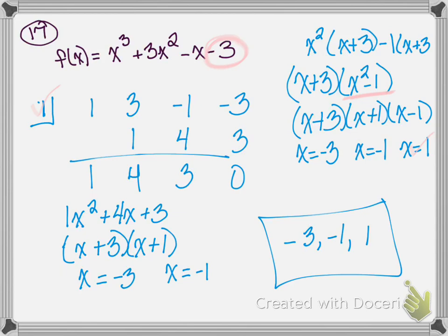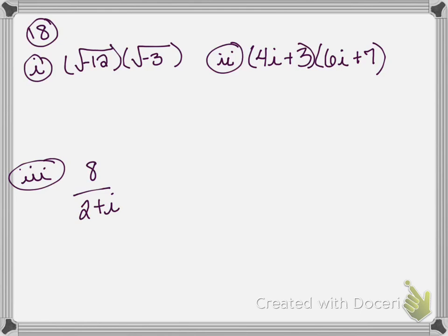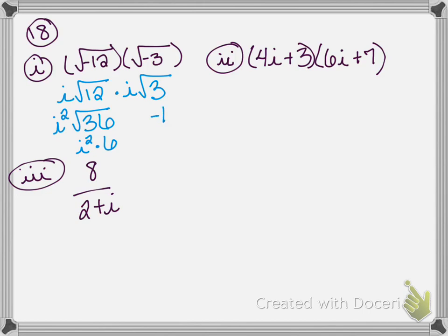Number 18 has us working with negative square roots. My first one: square root of negative 12 times square root of negative 3. Before we can do anything, we've got to pull that i out. The square root of negative 12 is i times the square root of 12, and we multiply that times i times the square root of 3. i times i is i squared. 12 times 3 is 36, and the square root of 36 is 6. So I have i squared times 6. Since i squared is negative 1, that gives negative 1 times 6, so the final answer is negative 6.